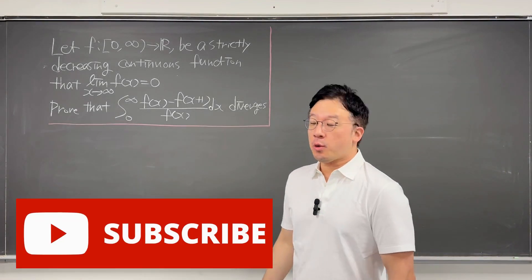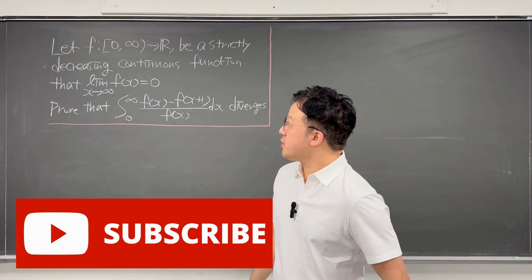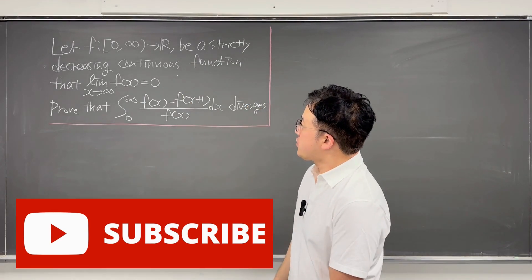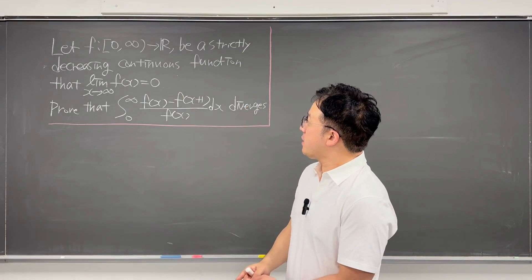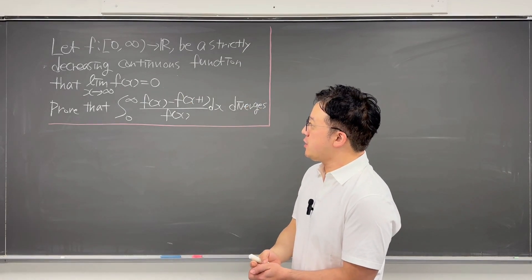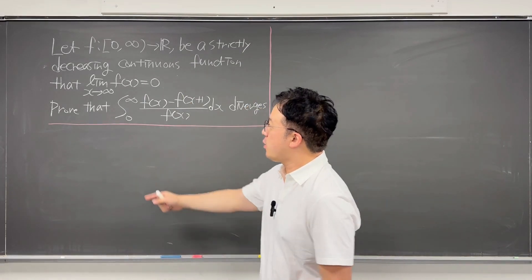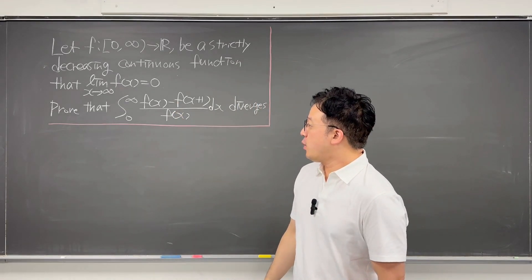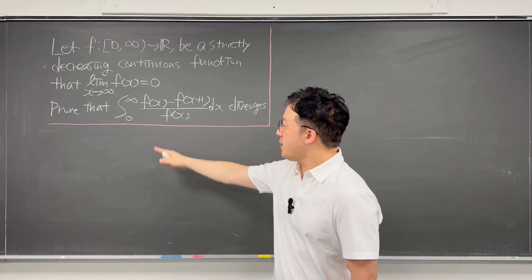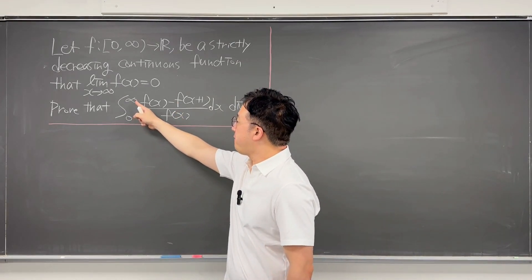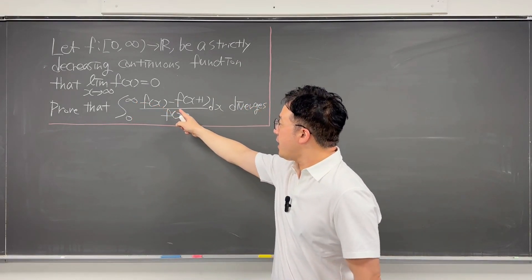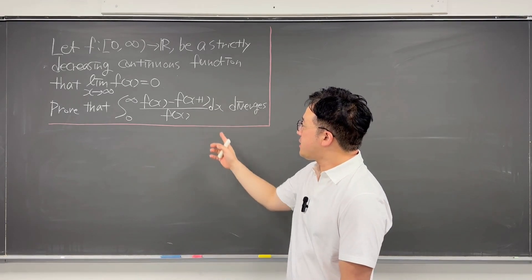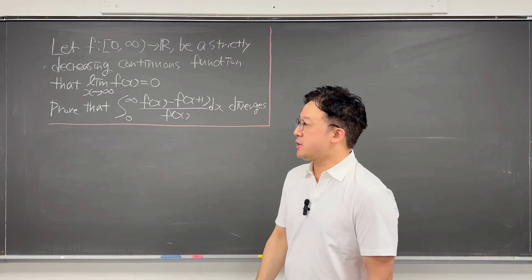Okay, here's the question. Let this function f from 0 to infinity going to real numbers be a strictly decreasing continuous function such that the limit as x goes to infinity of f(x) is equal to 0. Then we need to prove that the integral from 0 to infinity of (f(x) minus f(x+1)) over f(x) dx diverges.